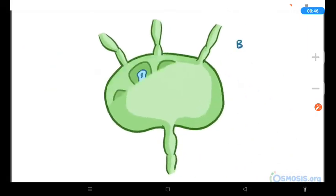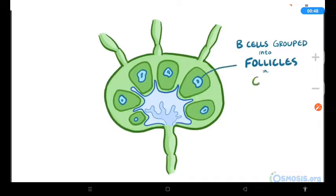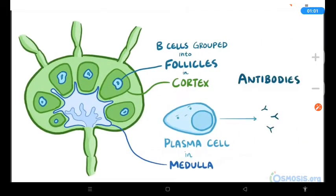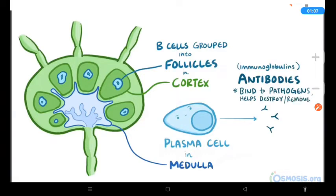Each lymph node has B-cells, which group together in follicles in the cortex, or outer part of the lymph node, along with T-cells in the paracortex, just below the cortex. B-cells differentiate into plasma cells, which are found in the medulla, or center of the lymph nodes. Plasma cells release antibodies, or immunoglobulins, which bind to pathogens like viruses and bacteria to help destroy or remove them.